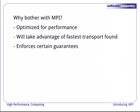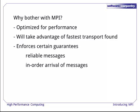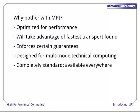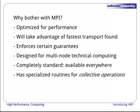MPI enforces other guarantees, like guaranteeing messages arrive rather than being lost and requiring retries, and that messages arrive in order. This enormously simplifies programming. MPI is designed for multinode technical computing, meaning we can spend our time figuring out how to decompose our scientific problem rather than worrying about network protocols. It is based on the standards process and is the most widely used interface of its type. It comes with specialized routines for collective communications of the sort frequently needed in science or engineering computations.